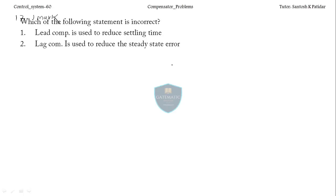Second statement: the lag compensator is used to reduce the steady state error. Yes, the lag compensator improves the steady state behavior of the system by reducing errors — this is correct. Third point: the lead compensator may increase the order of the system. Definitely it will increase the order because you are adding poles into the denominator. It may increase the order since you are adding zeros also, but adding a single pole in the denominator definitely increases the order.